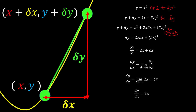We just need to carry out the simultaneous, where we use the second equation minus the first equation. So y plus delta y minus y leaves us with delta y, and x squared minus x squared cancels out, so we're left with only 2x·delta x and delta x squared.